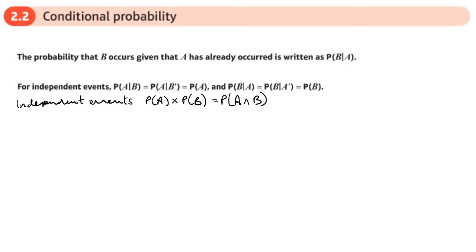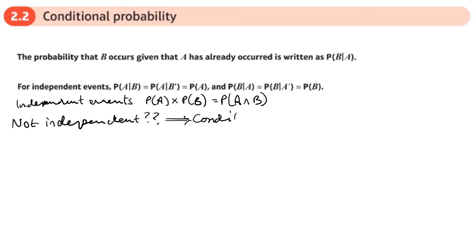But what if things are not independent? When things are not independent, we call them conditional, which basically means that one event is affected by another.